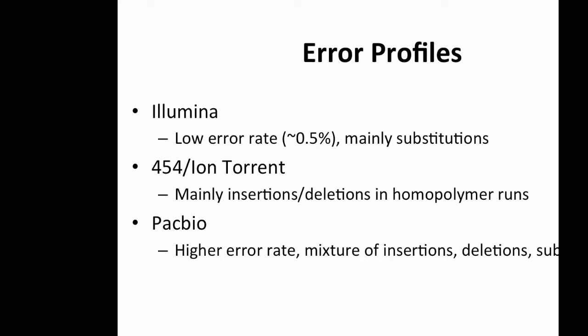Different sequencing platforms have different error profiles. Illumina has a fairly low error rate — on average about one in 200 bases — mainly substitution errors. The 454 and Ion Torrent sequencers are mainly insertions and deletions in homopolymer runs. The PacBio sequencer has a much higher error rate of about 15%, with a mixture of insertions, deletions, and substitutions. When working with sequencing data, it's important to be aware of these different error profiles so you can distinguish sequencing errors from true mutations or SNPs.